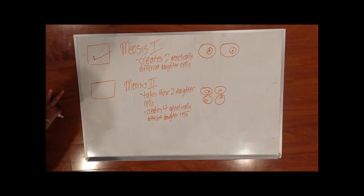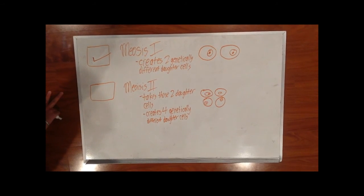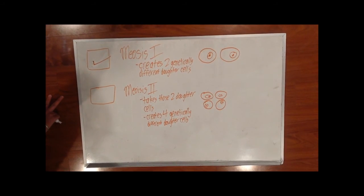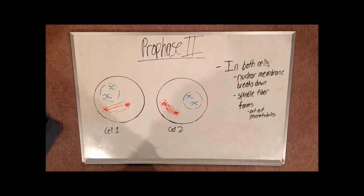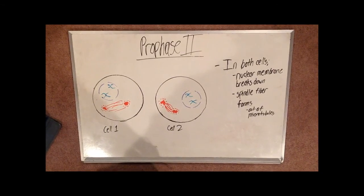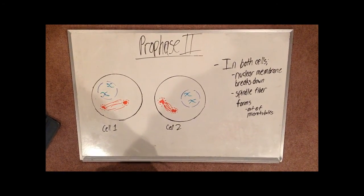Meiosis 2 results in those two daughter cells forming each two daughter cells. In the end, there will be four daughter cells formed. The processes in meiosis 2 are very similar to mitosis. These processes have the same names as those in meiosis 1.